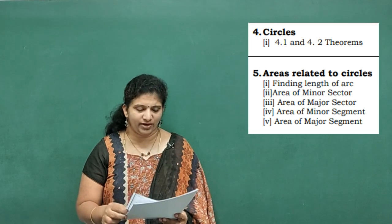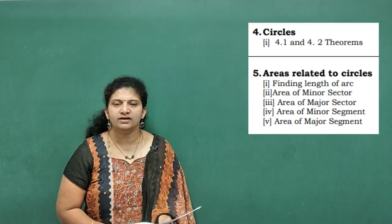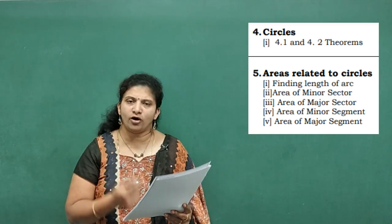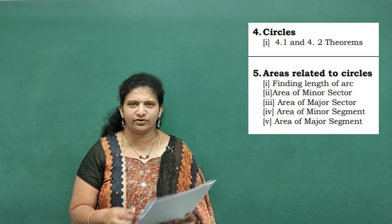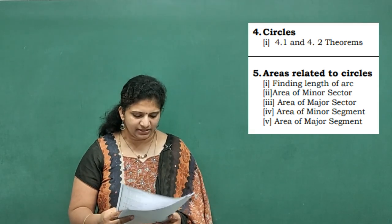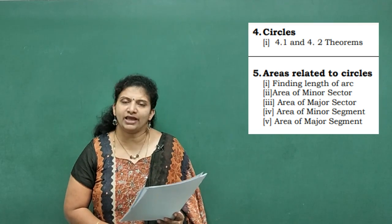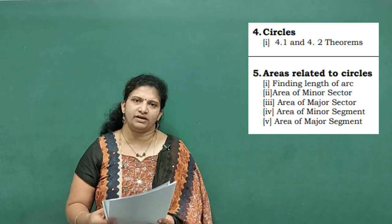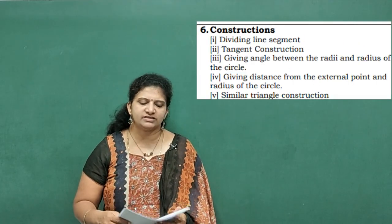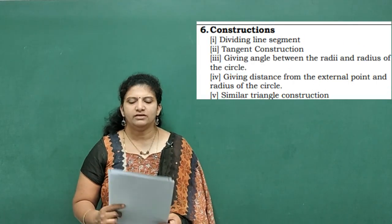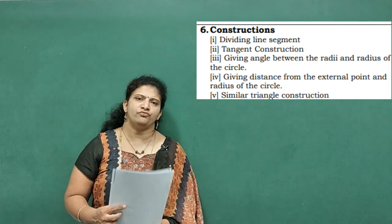Fifth chapter — Areas Related to Circles. This is all formula-oriented. One question I can expect for two marks: finding the length of arc, area of minor sector, major sector, area of minor segment, and major segment. Coming to the sixth chapter — Constructions. In this chapter we can expect three plus four, or two plus three, or two plus four marks.